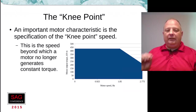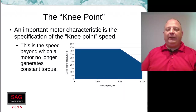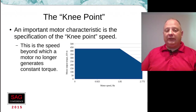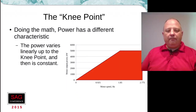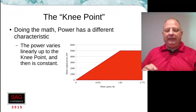Key thing: as the designer, you get to choose where that knee point is, and you need to communicate that to the motor vendor, the motor designer. Because motor power and motor torque are related by speed, when you do the math the power has an opposite characteristic.